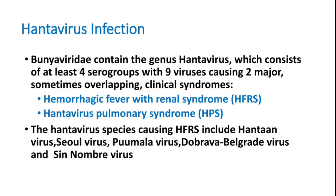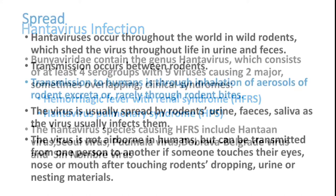Now, hantavirus — let us see how it spreads. It spreads from wild rodents through their urine and stool. Transmission to humans occurs through inhalation of aerosols from rodent excreta, and it can rarely also transmit through rodent bites. Importantly, it does not spread from one person to another. So it is a rodent-generated infection which occurs through aerosols from rodent excreta.